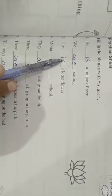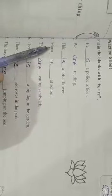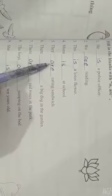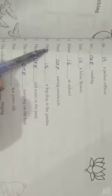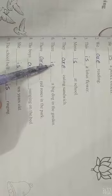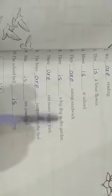This is, this egg. Muna is at school. There is a big dog in the garden. Big dog, one, okay.